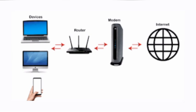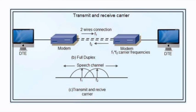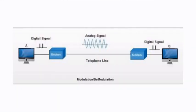MODEM stands for modulation and demodulation. It is basically used to convert analog signals to digital and vice versa. For example, broadband coming from your landline contains a signal in analog form, and to communicate and make it understandable to your computer, it is converted into digital. This process is called modulation.